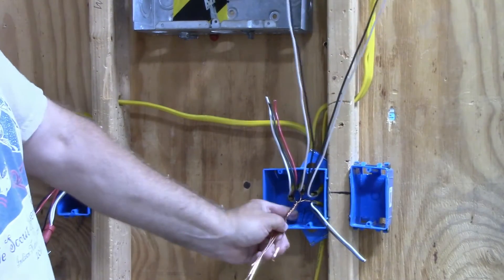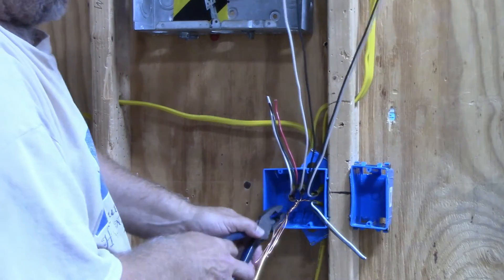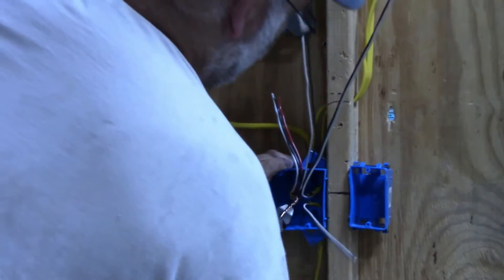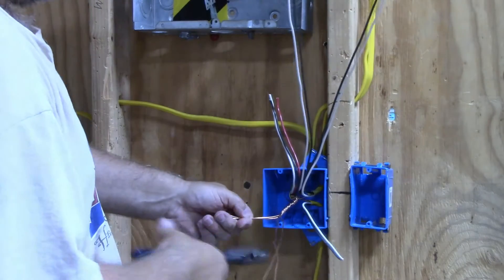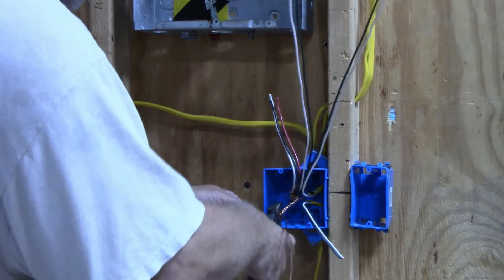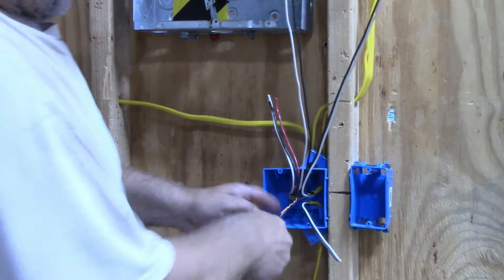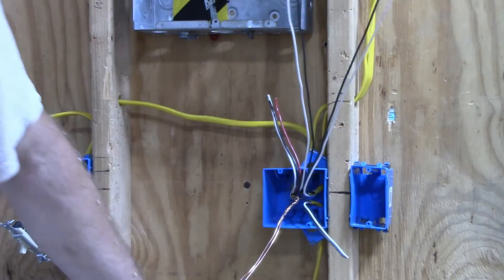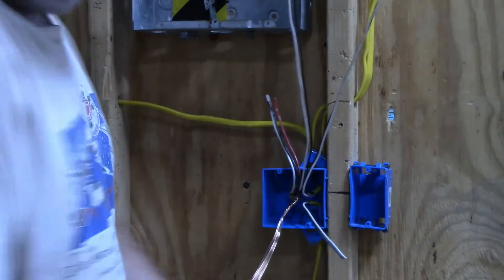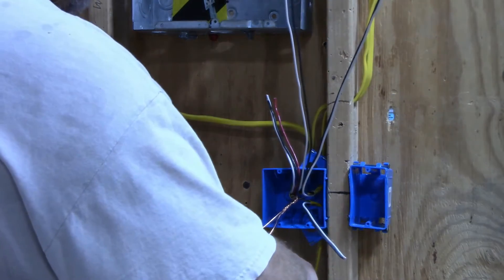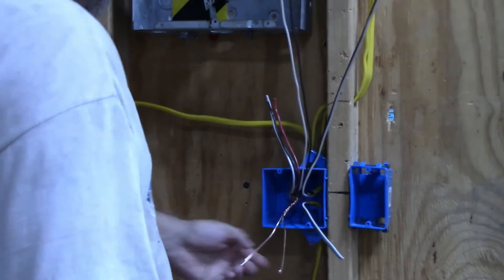You want to have these nice and tight so if you were to put a tester on it, it wouldn't read open ground on your circuit. Get them nice and tight, then snip off two of the four wires, leaving the other two wires to hook up to your switches. Snip them about six inches from the box and put a little hook on them so we can attach them to the switches.